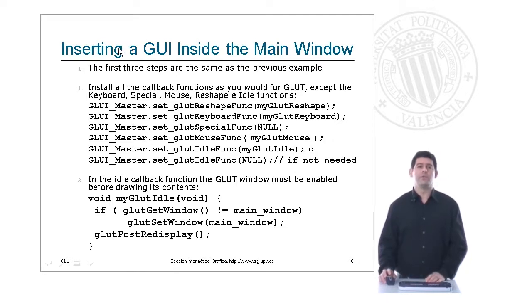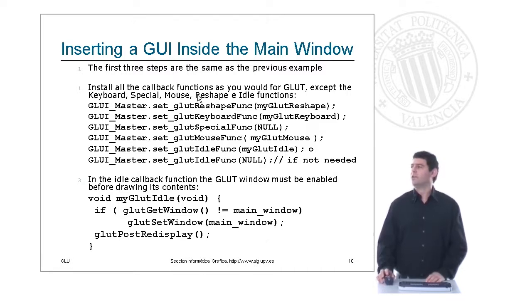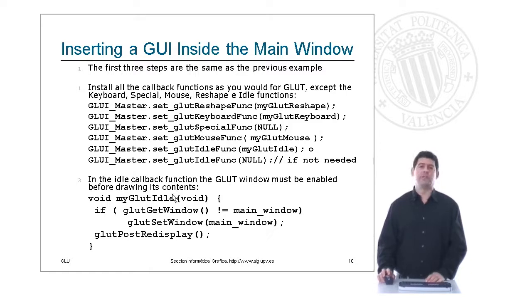If we want to insert the GUI inside of the main window, then we follow these steps. The first three steps are the same as for the other case. Then the callback functions for the mouse, special, etc. callbacks have to be initialized this way. The GLUT idle function must then be defined in the same way as before.